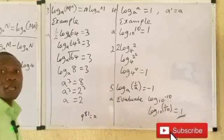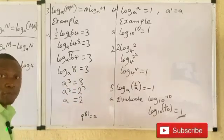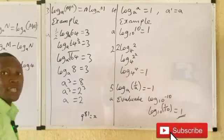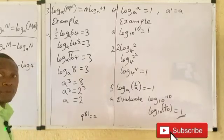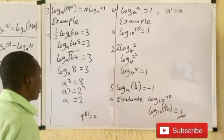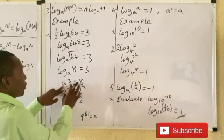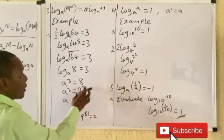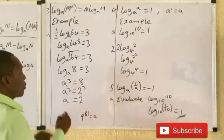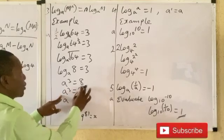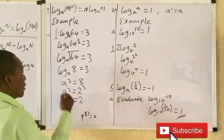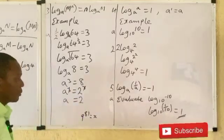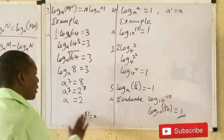Please watch part one of this series to understand how to convert between index form and logarithmic form. We have a raised to power 3 equals 8. Since 8 is 2 raised to power 3, we have a raised to power 3 equals 2 raised to power 3. The 3s cancel, so a equals 2.